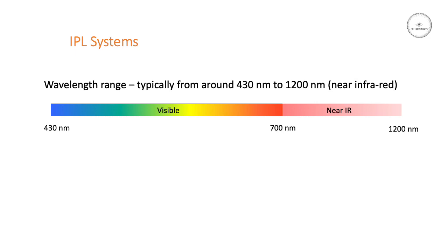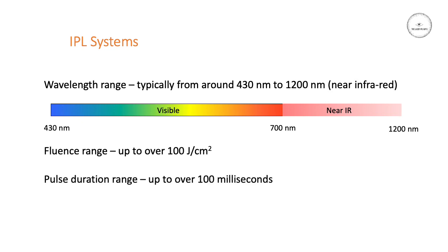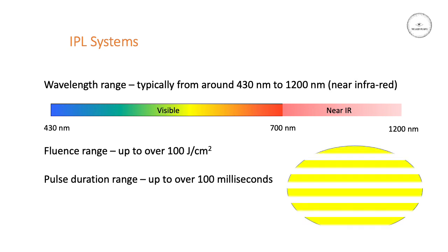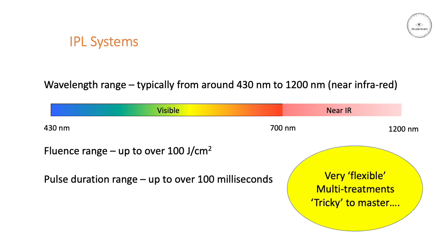This means it contains both visible and invisible infrared light. The fluence range can be up to over 100 joules per square centimeter, while the pulse duration range can go over 100 milliseconds. This is mostly due to the fact that most IPL systems generate a train of sub-pulses and add them all together into one single pulse. This makes IPL systems very flexible since you have quite a choice over wavelength, fluence and pulse duration, which means it can also treat a number of conditions in the skin.